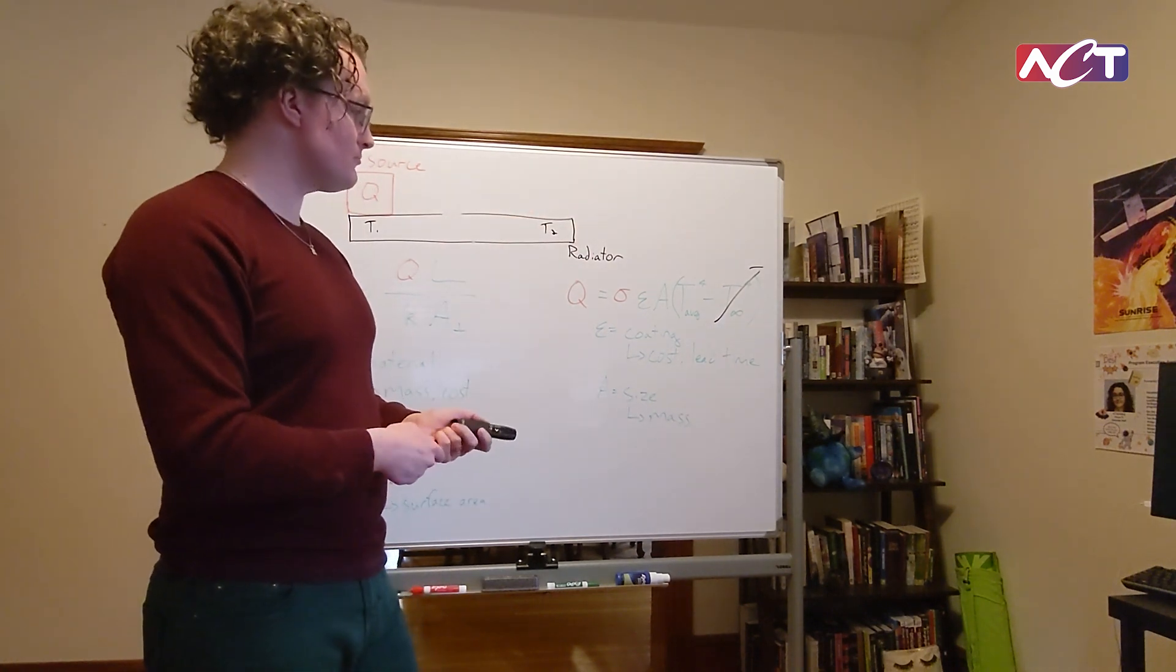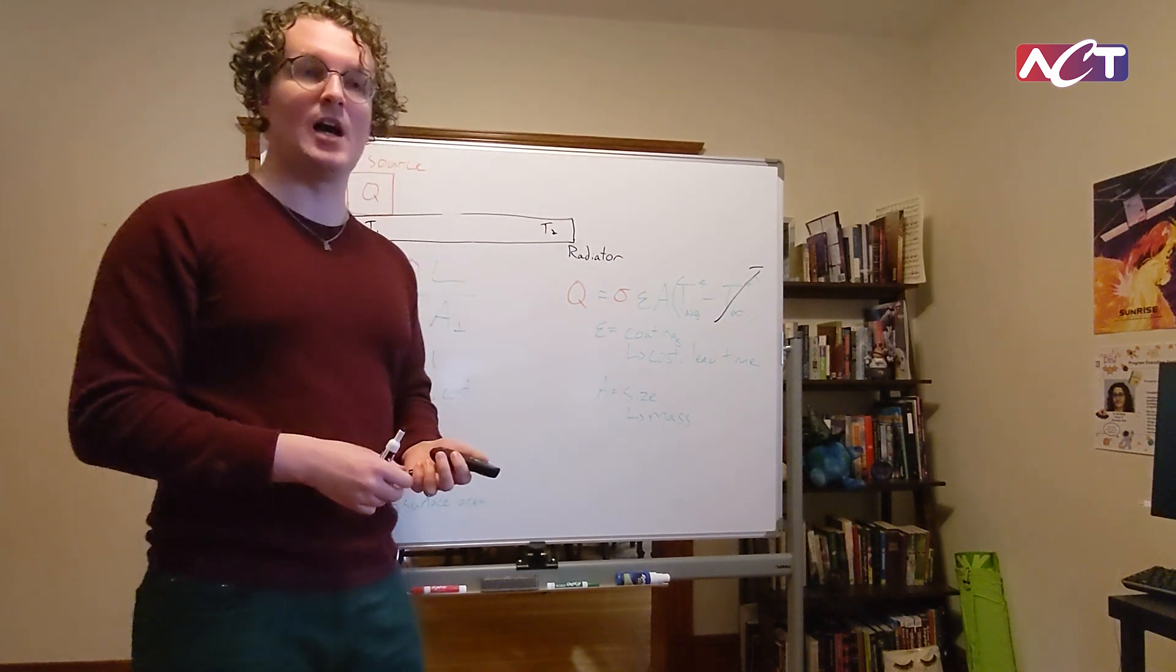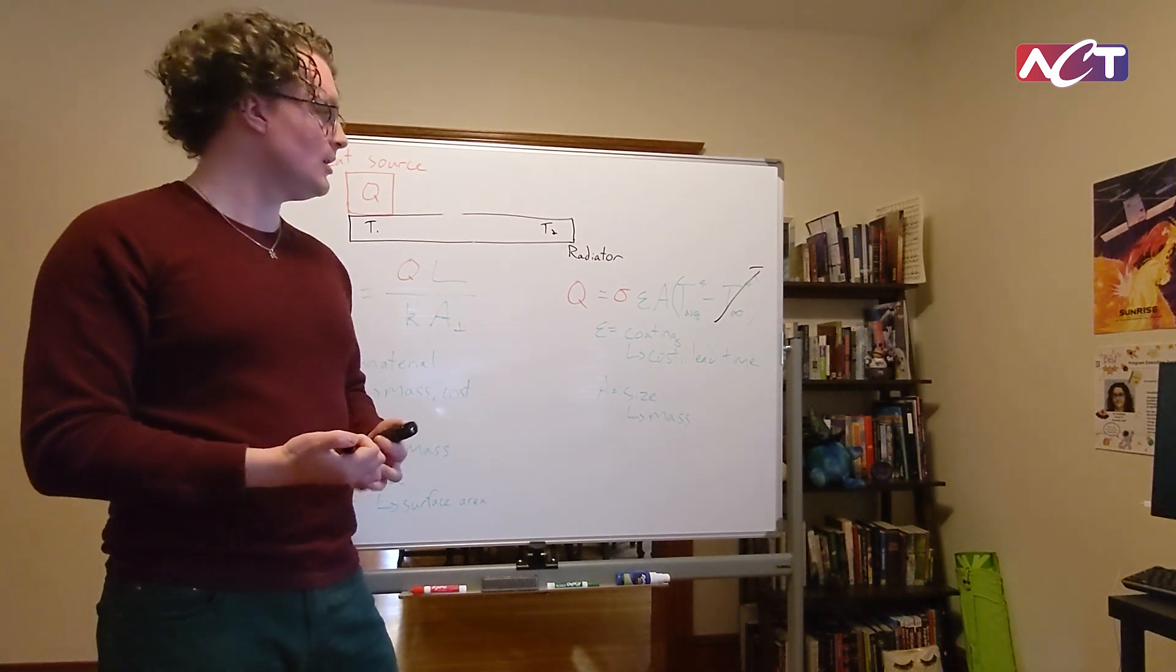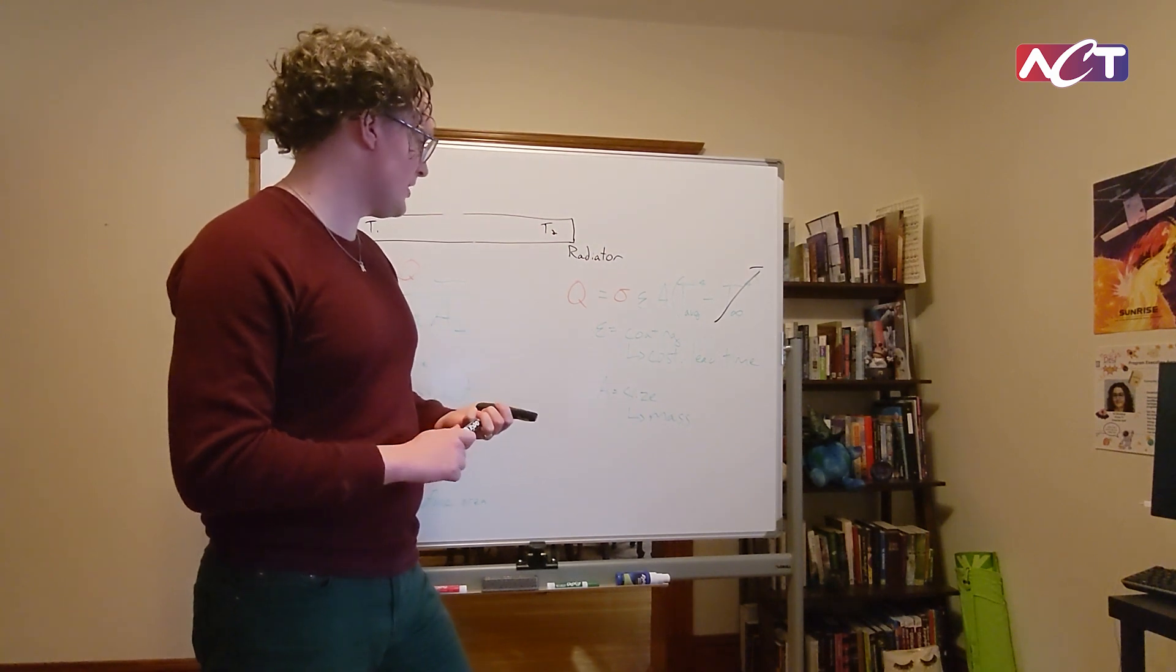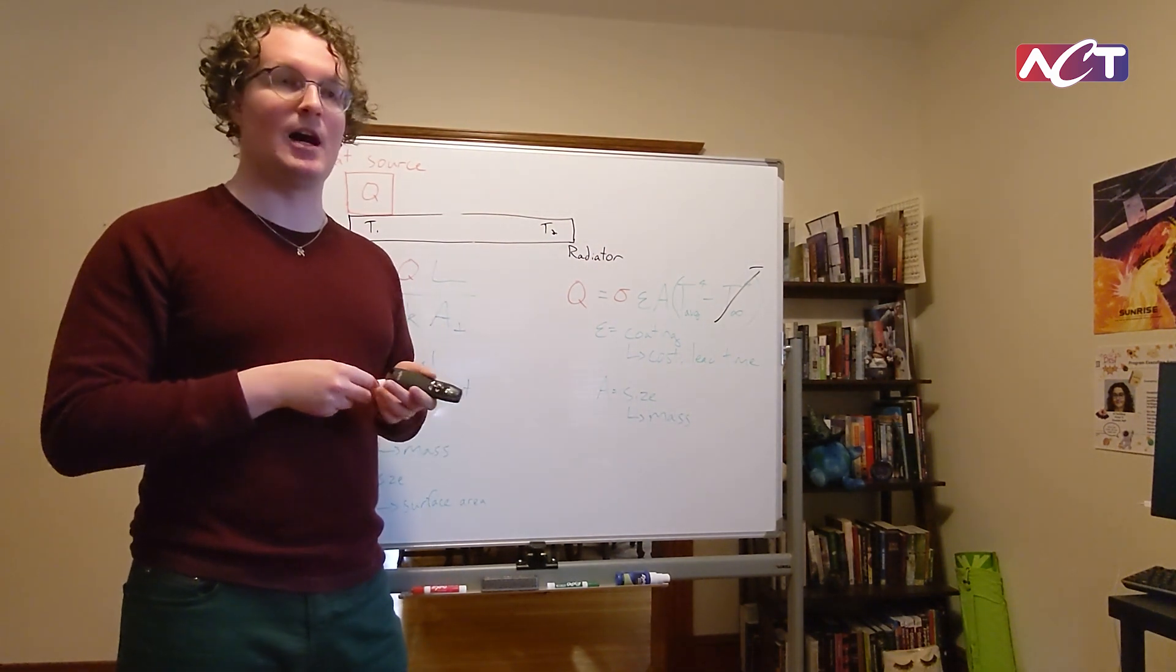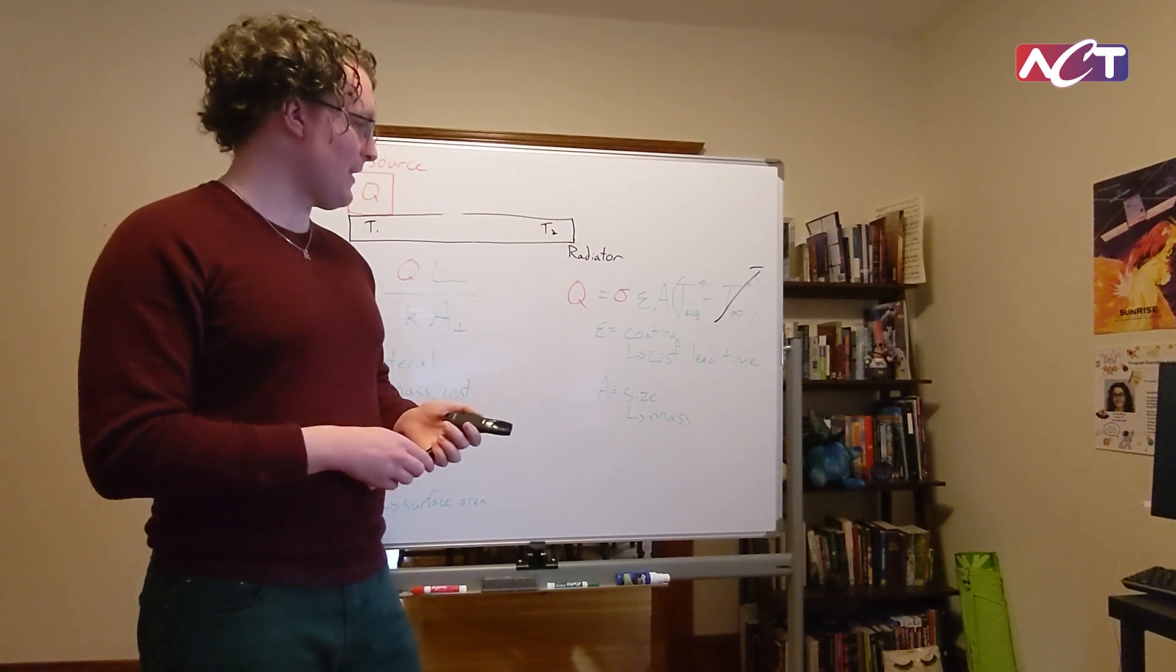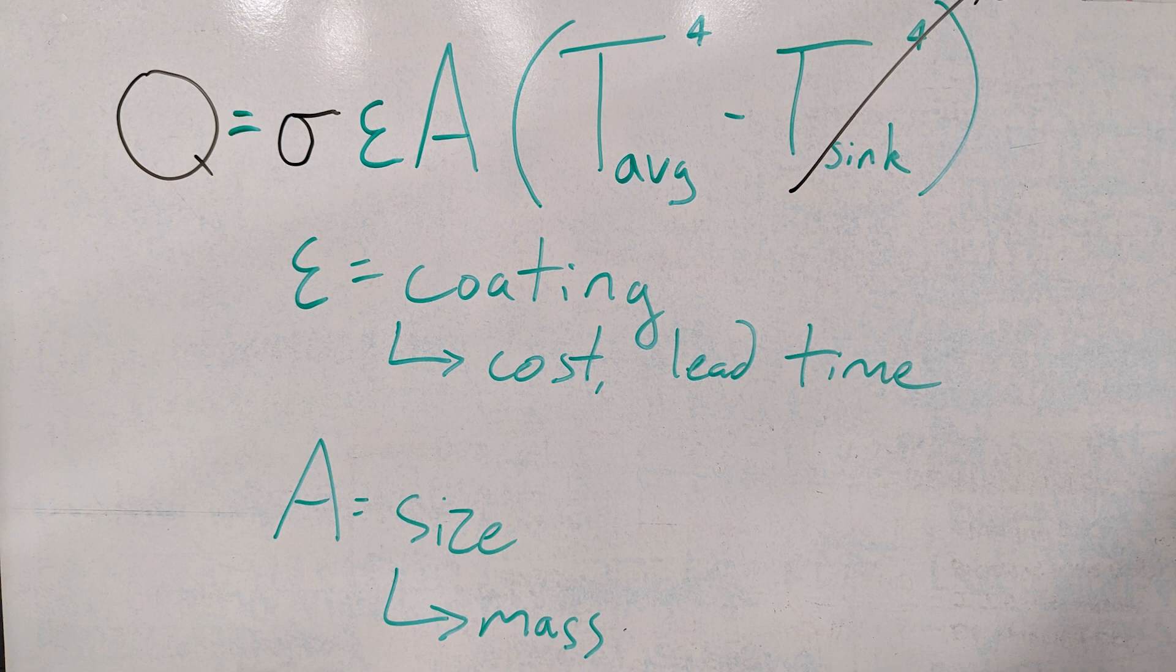The emissivity is a property of the surface. You can get different coatings on your radiator that provide higher emissivities, with the highest emissivity possible being 1.0. The area of the radiator of course affects its size and ultimately its mass, so a larger area will give you more cooling power but at the cost of mass.